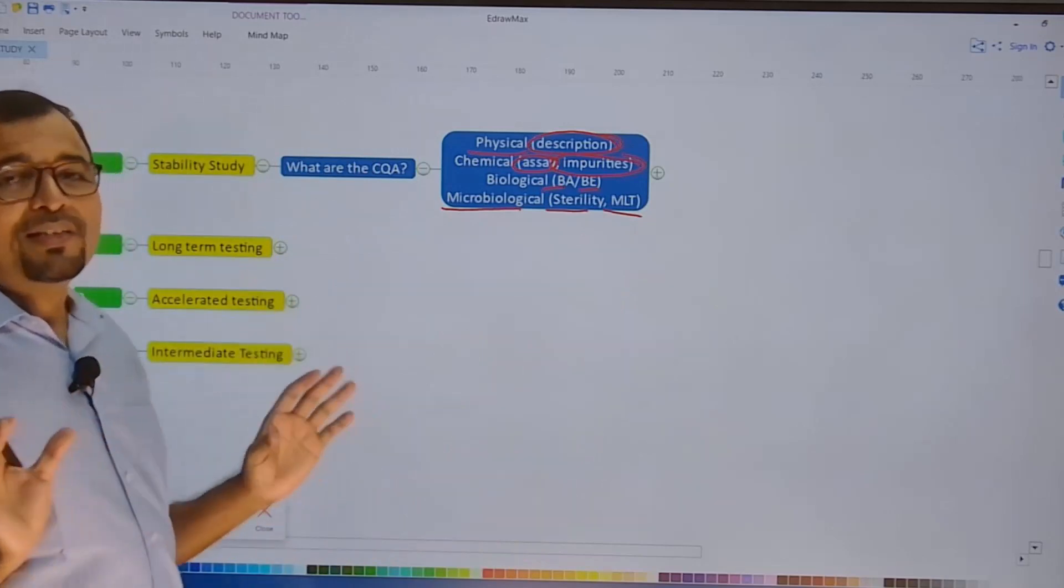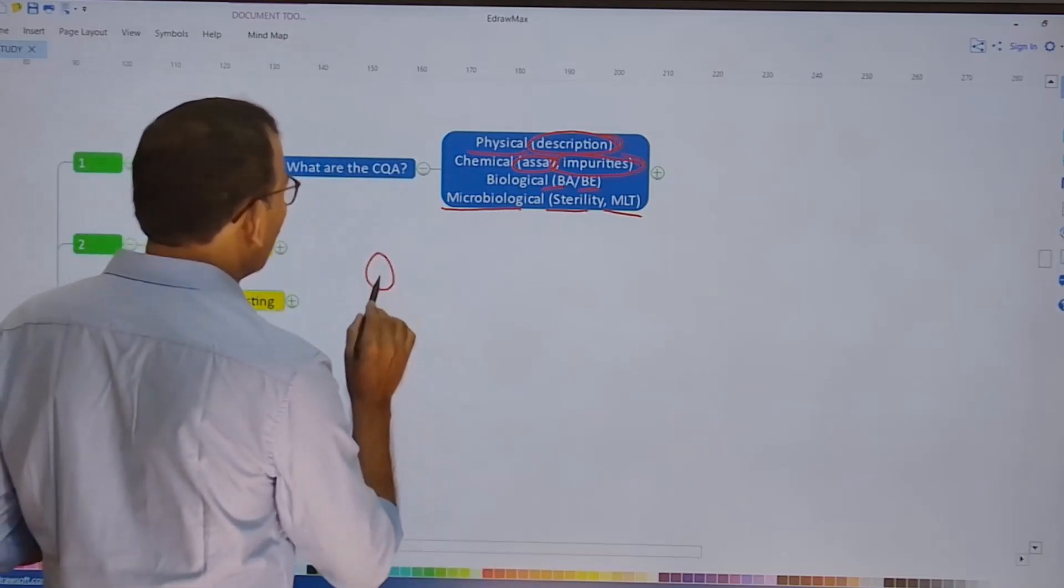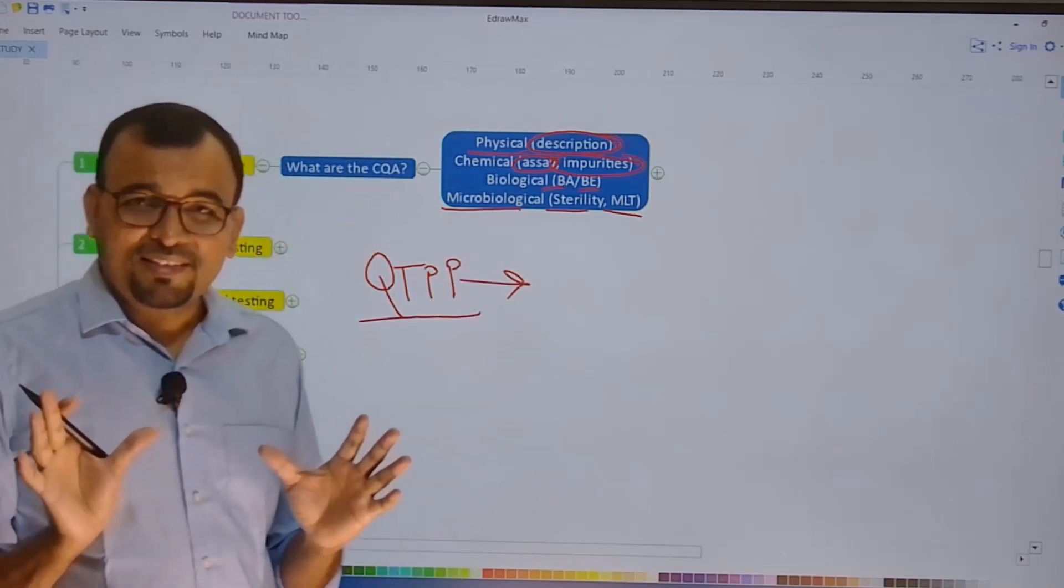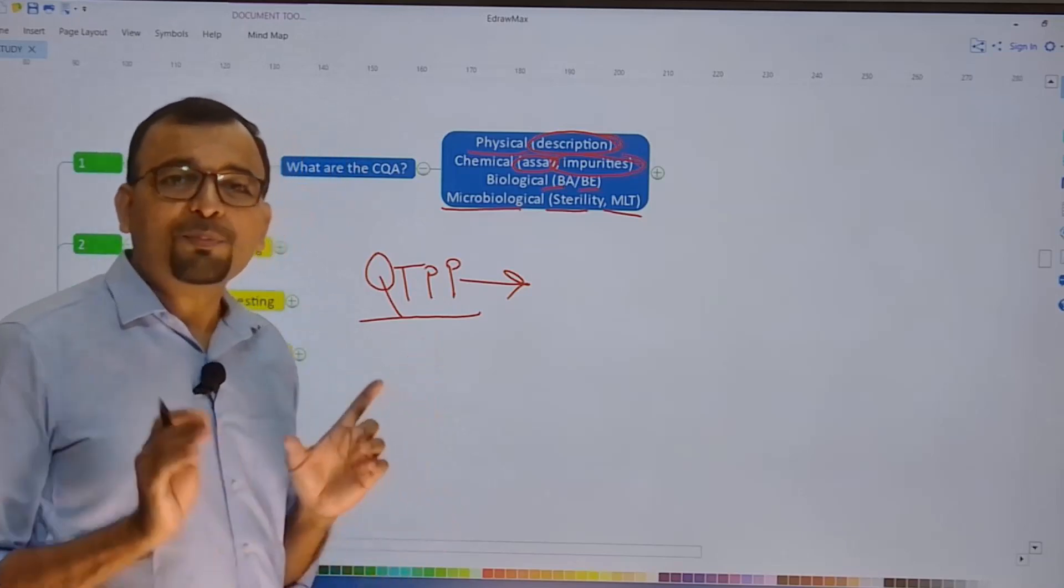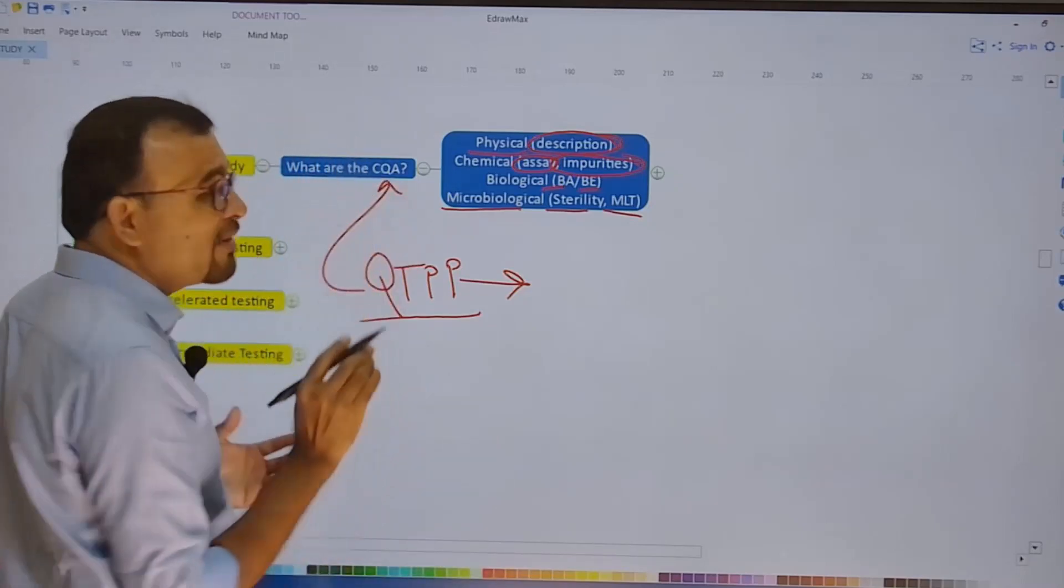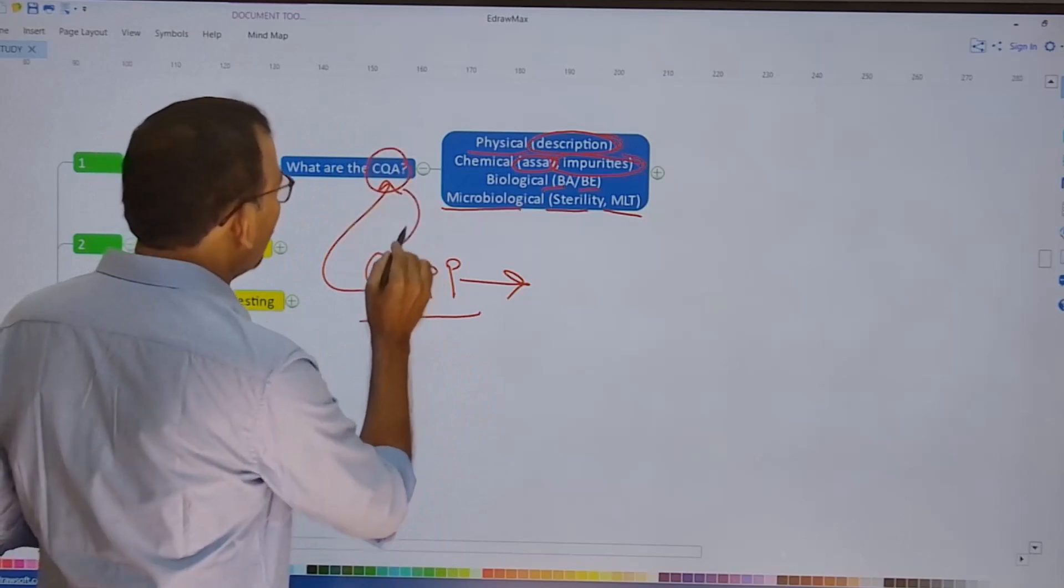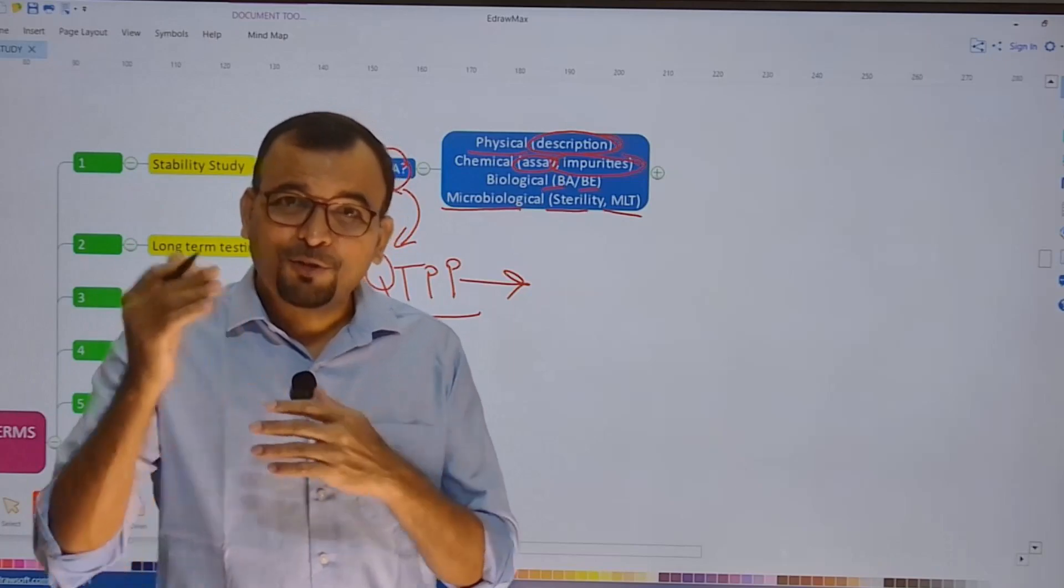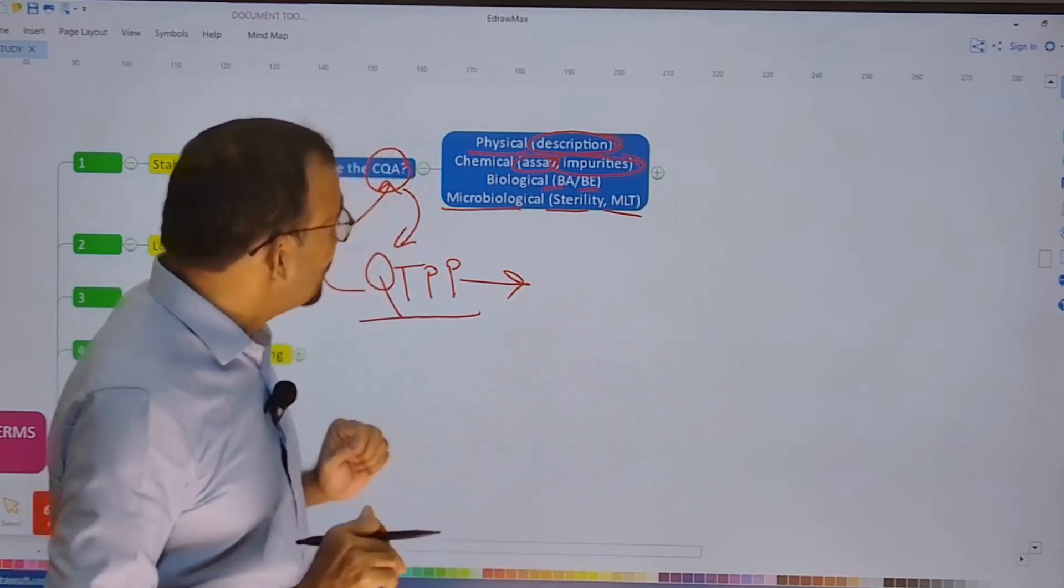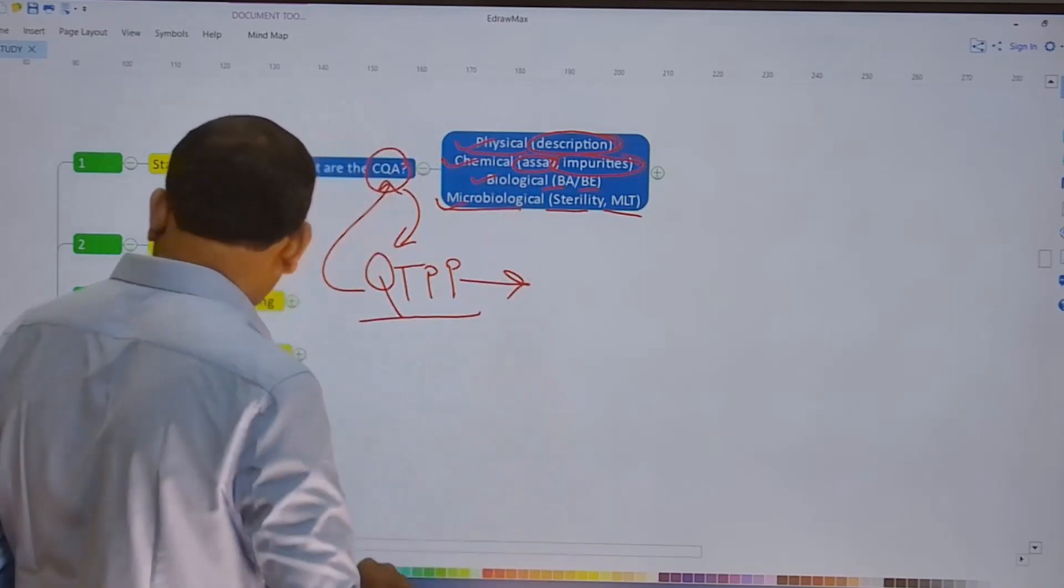Now why is it important to achieve all these critical quality attributes throughout the shelf life of the product? Because you need to meet something called the QTPP. Now this is the purpose of developing a product. The QTPP stands for Quality Target Product Profile. Now how will the QTPP be realized? The QTPP will be realized once your CQAs are within the specification. That means this is the indirect confirmation of the QTPP. If the CQA gets met, that also confirms that our Quality Target Product Profile must have also got met. So hence it is very important to understand there are physical, chemical, biological, and microbiological CQAs or critical quality attributes.